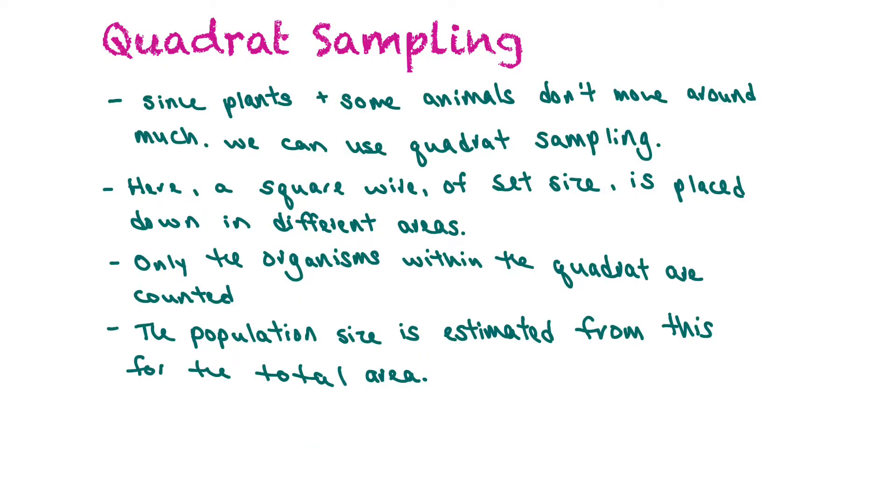So our second method of population estimation would be quadrat sampling and this sampling works well for plants and animals that don't move around. Here you would use a square wire of set size and you would drop it or place it down in different areas and you would only count the organisms within the quadrat and then the population size would be estimated from this for the total area of the space.